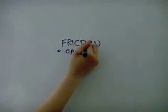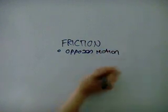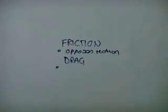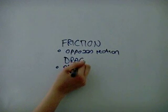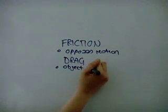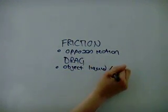Friction is a force that opposes motion. Drag is like friction, and an object that moves through a fluid, such as a liquid or a gas, experiences drag.